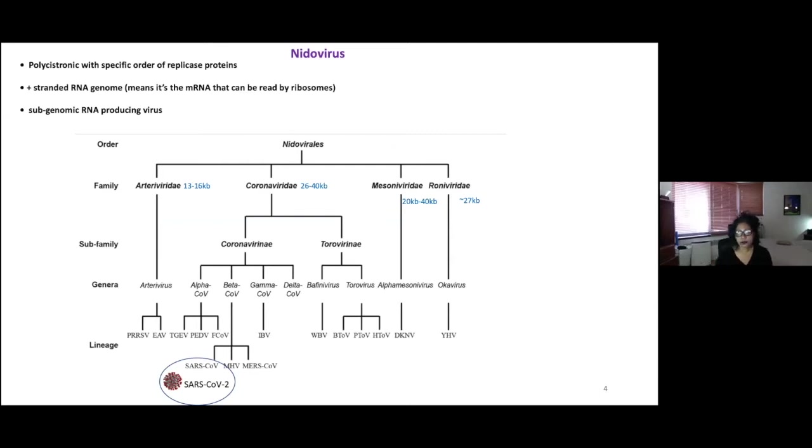It's a positive strand, and they also have this very peculiar feature that only the viruses have where they produce subgenomic RNA. SARS-CoV-2 is considered a beta coronavirus.